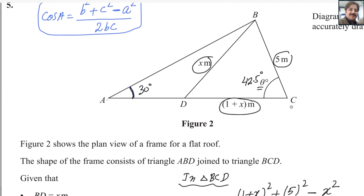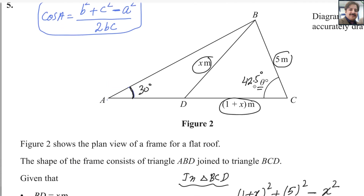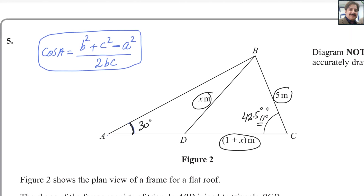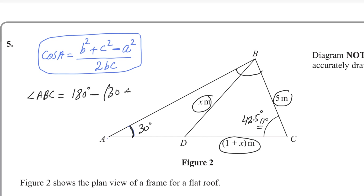Now go back to the figure. This angle theta is 42.5 degrees. To use the area formula, two sides and the included angle must be known. But here only BC is given, so we need to find the other sides. The third angle can be found using the fact that angles in a triangle sum to 180 degrees. Subtracting the two known angles: 180 minus 30 minus 42.5 gives angle ABC equals 107.5 degrees.